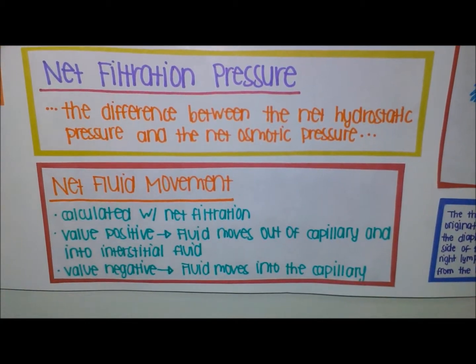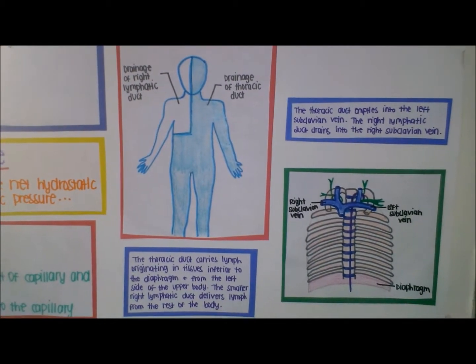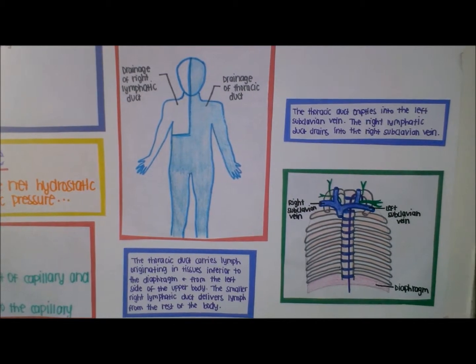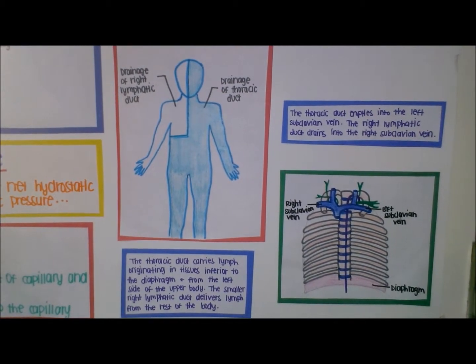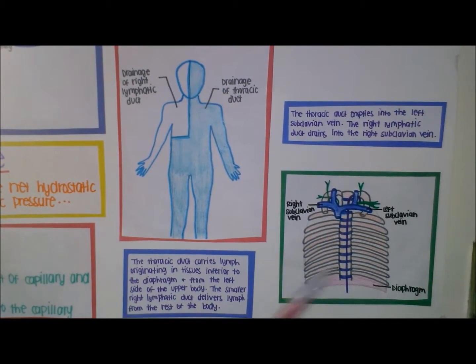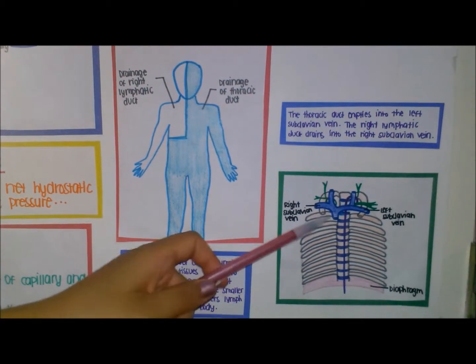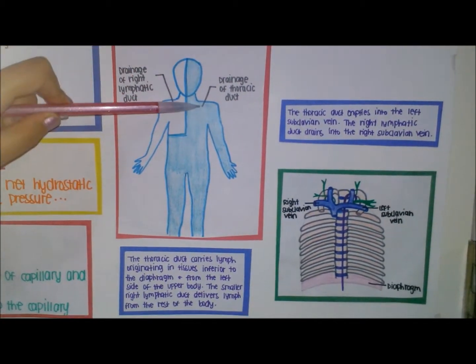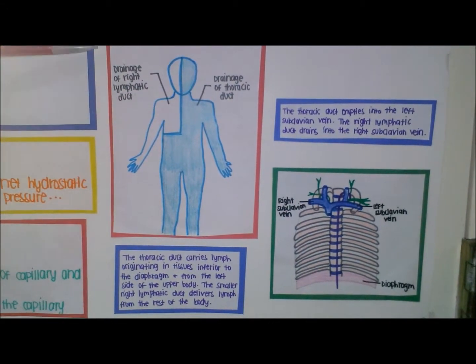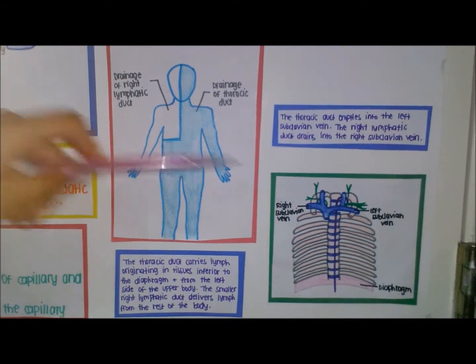The thoracic duct carries lymph originating in tissues inferior to the diaphragm and from the left side of the upper body, while the smaller right lymphatic duct carries lymph from the rest of the body. The thoracic duct empties into the left subclavian vein, and the right lymphatic duct drains into the right subclavian vein, as depicted in the picture.